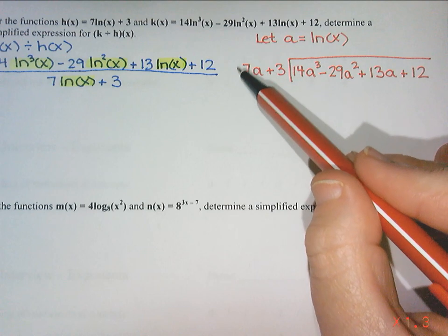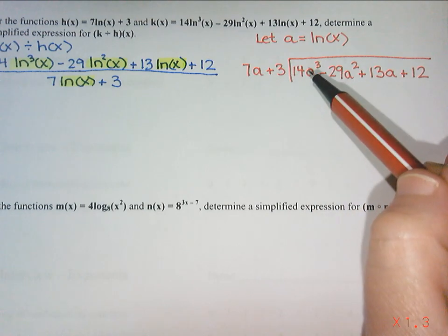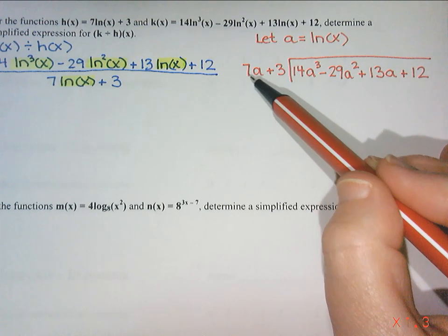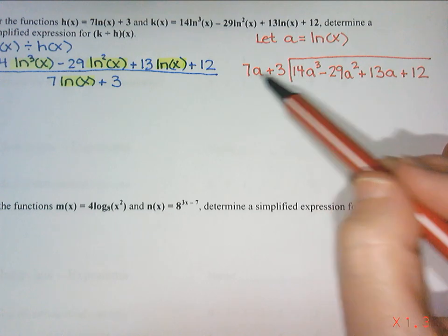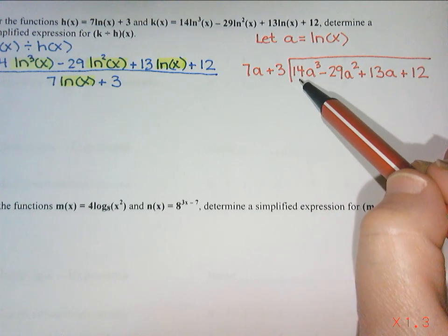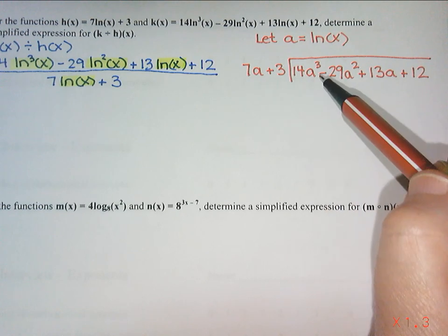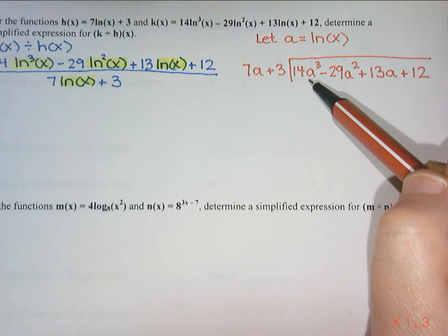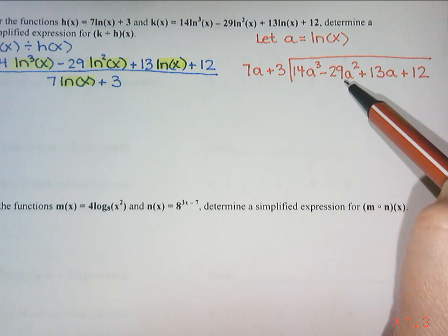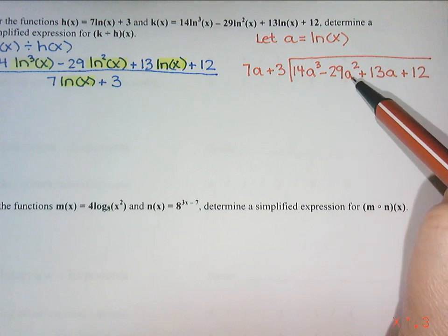So I want to figure out and always focus on that very first term. How do I turn a 7a into a 14a cubed? Well, to turn a 7 into a 14, we have to multiply by 2. And to turn an a into an a cubed, I need an a squared. So I'm going to multiply by 2a squared. So I'm going to write that above its like term, a squared. So I'm going to write 2a squared up top.